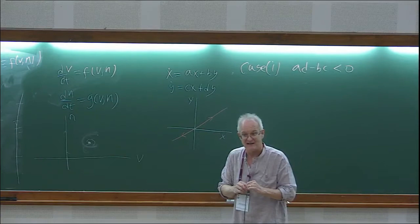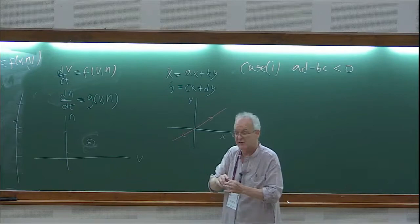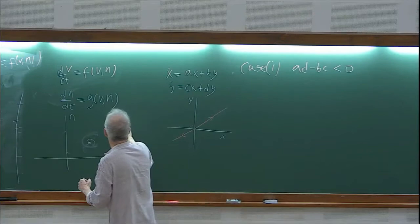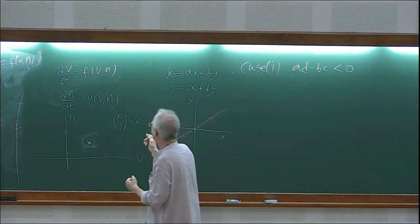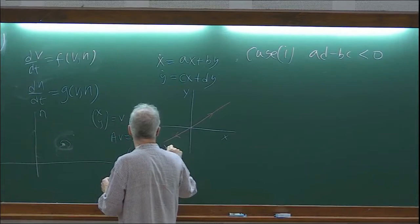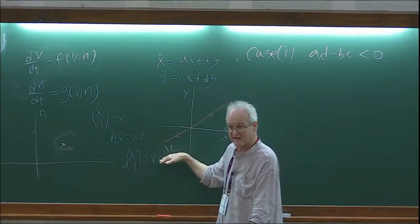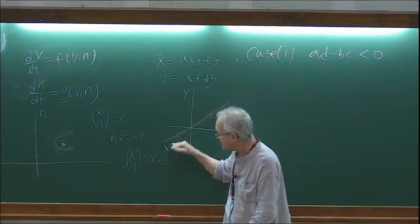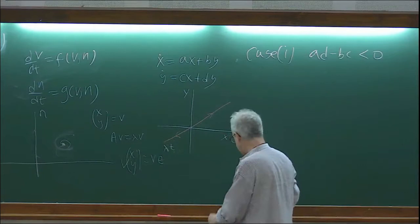If I start anywhere on the eigenvector, I'll stay on there. Suppose I start with x, y equal to v where v is the eigenvector; then the solution is x, y equals v·e^(λt). So we stay on that line — no matter what t is, it's always just a constant times that vector.